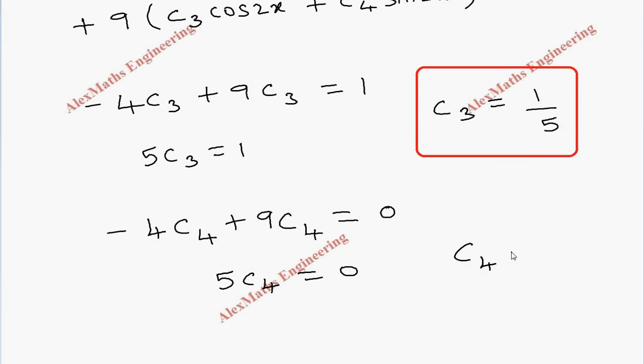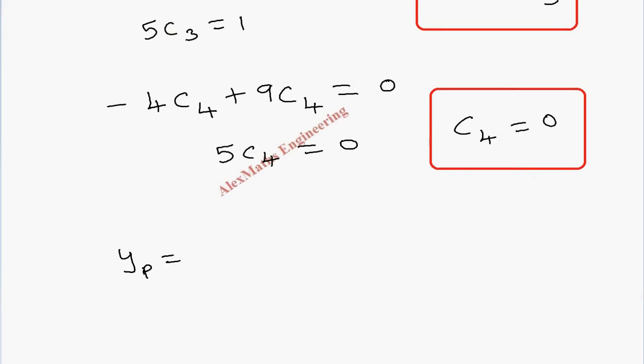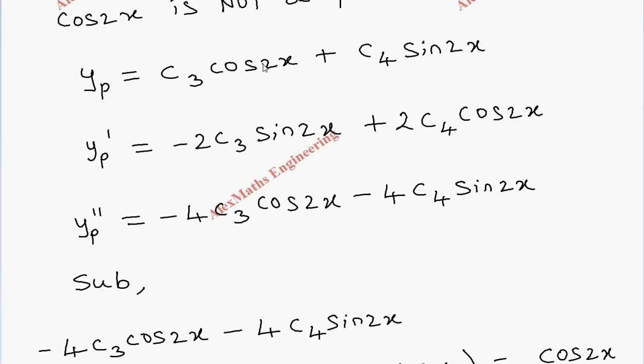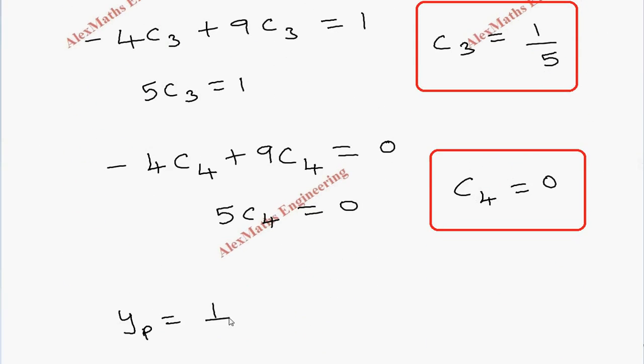So we got the value of both the constants and we have to substitute in the particular integral yₚ, which is c3 cos 2x plus c4 sin 2x. So we get 1 by 5 cos 2x, and the other term is 0.